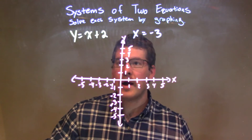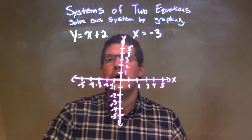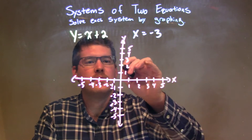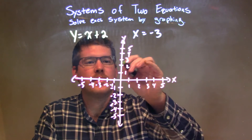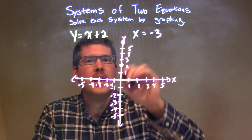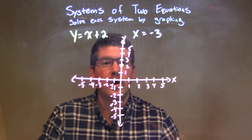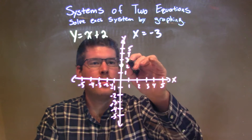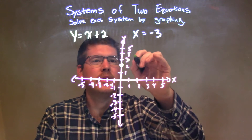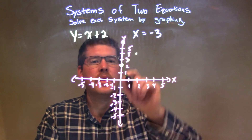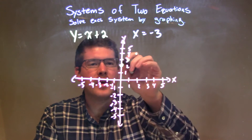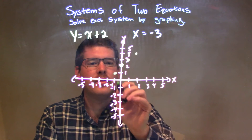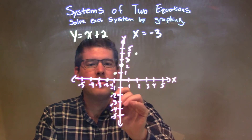Let's graph these. Our first equation has a y-intercept of 2, so we place a point at y equals 2. We have a slope of 1, which means our graph goes up 1 and over 1. We can also go down 1 and to the left 1.